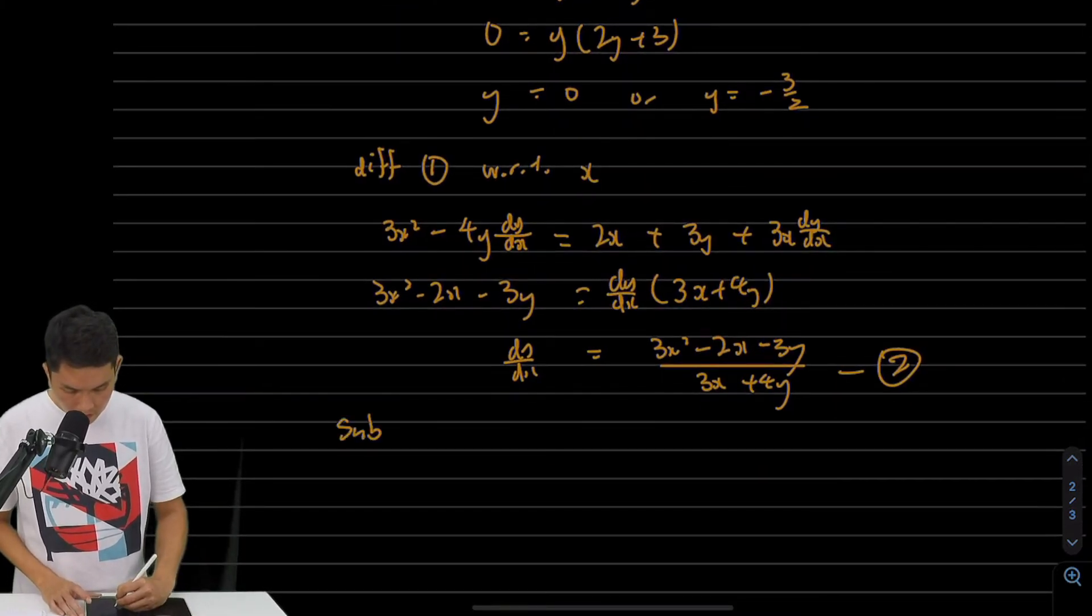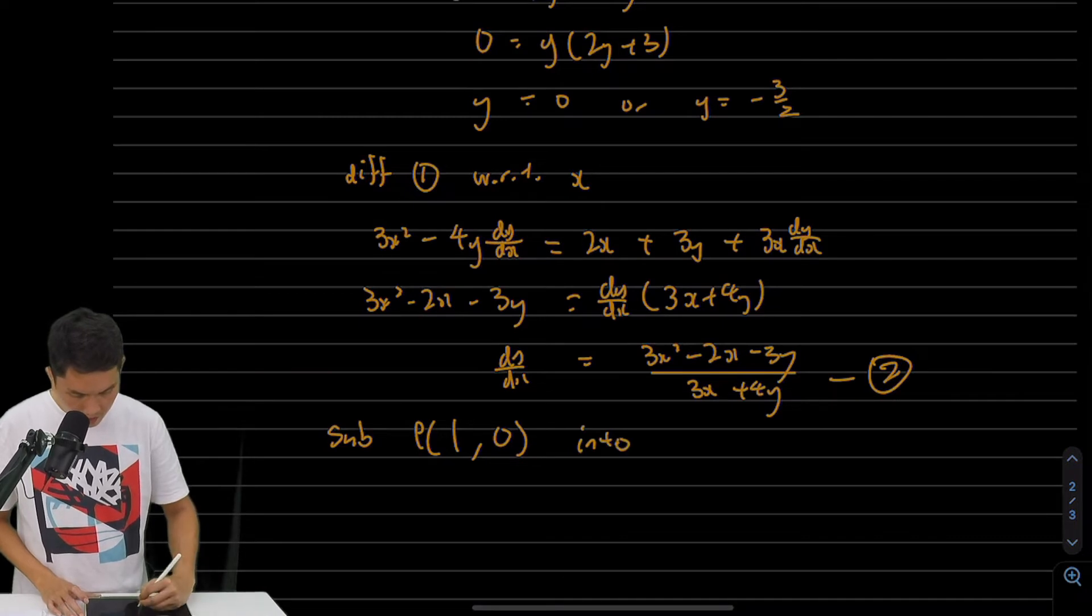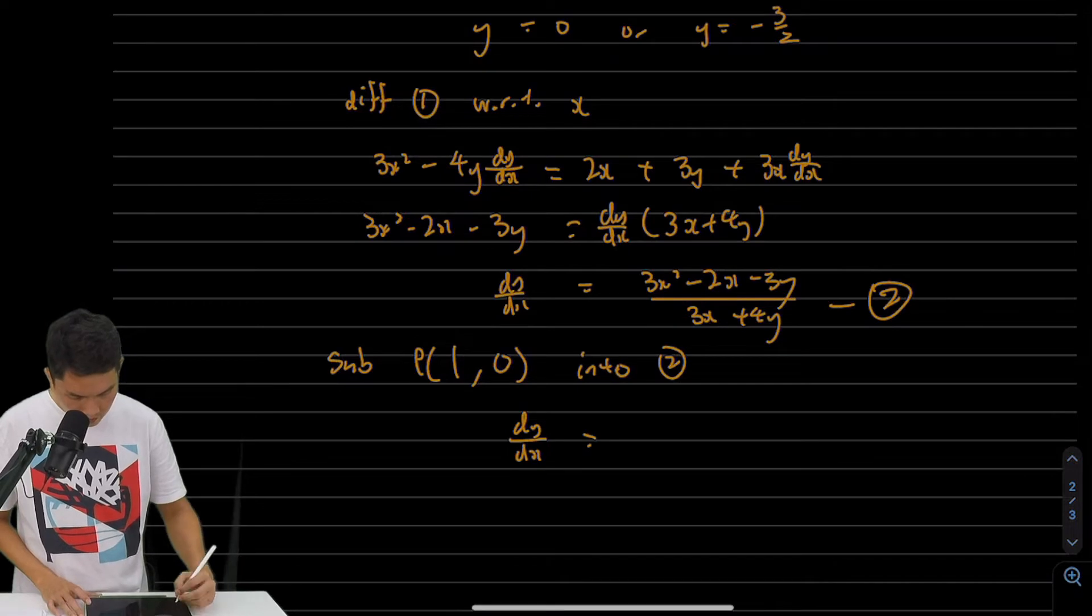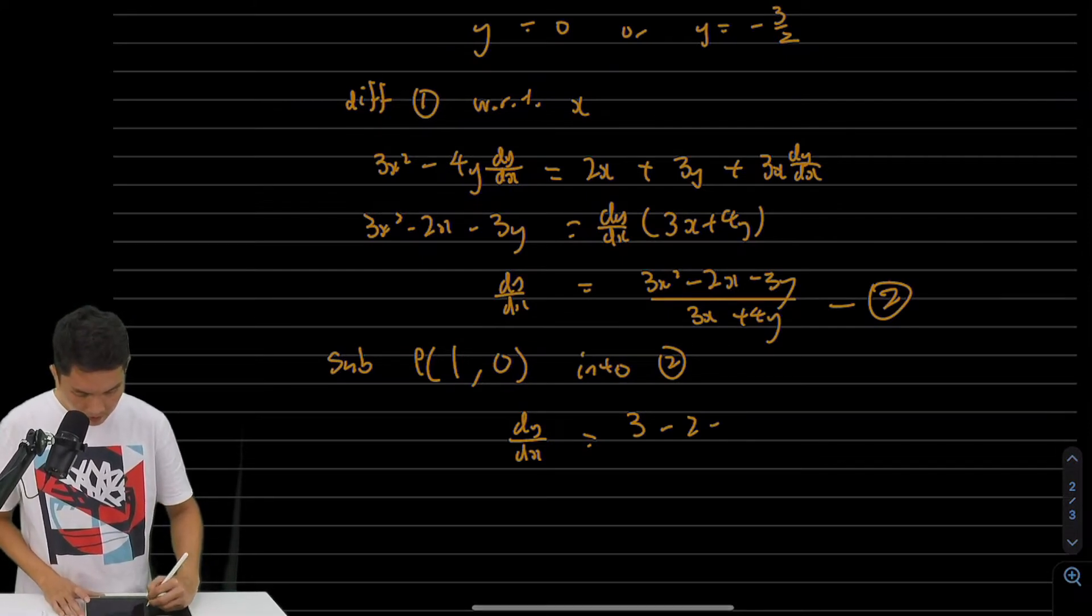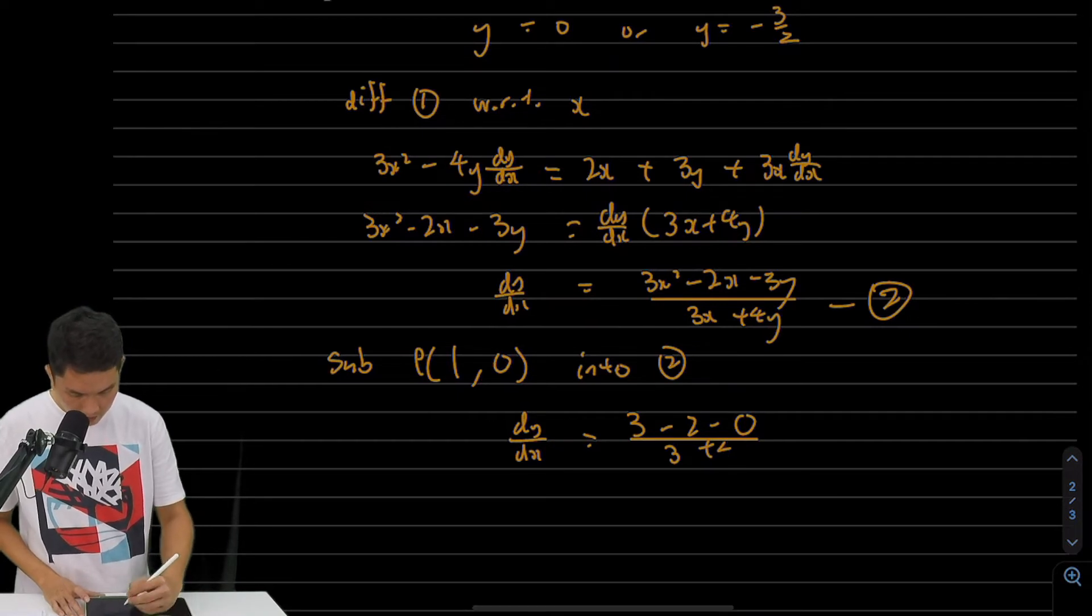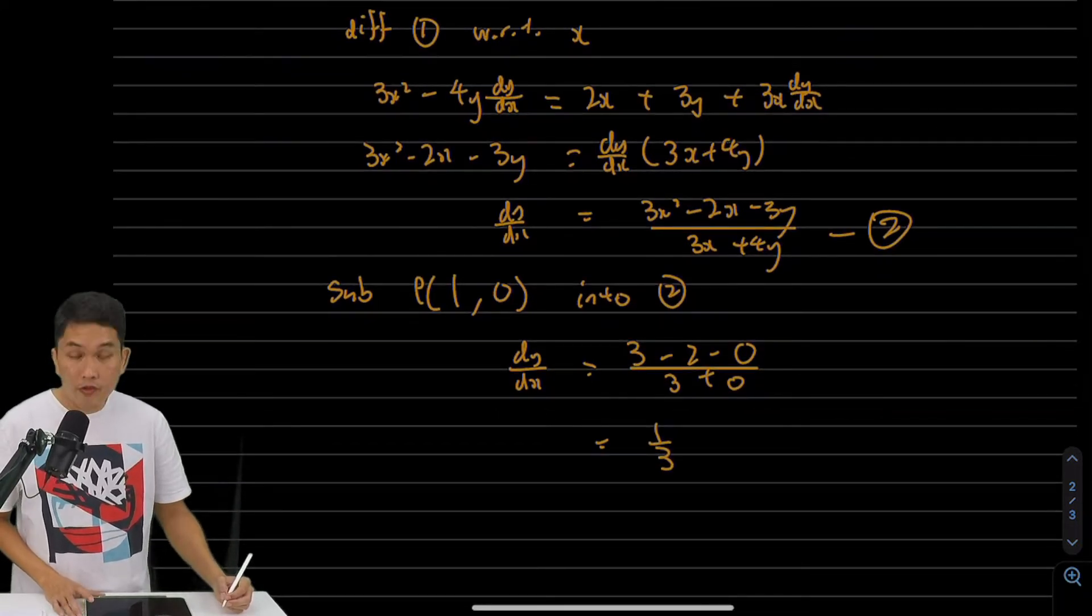Next, I'll substitute P, which is (1, 0), into dy/dx. So dy/dx = [3(1)² - 2(1) - 3(0)]/[3(1) + 4(0)] = (3 - 2 - 0)/(3 + 0) = 1/3. That is the gradient at point P.